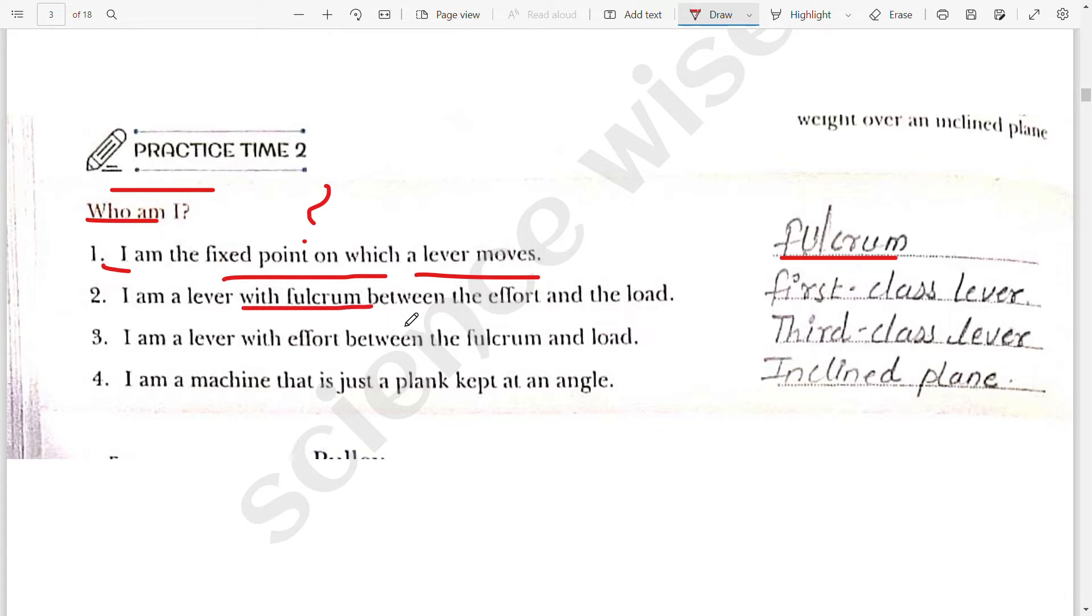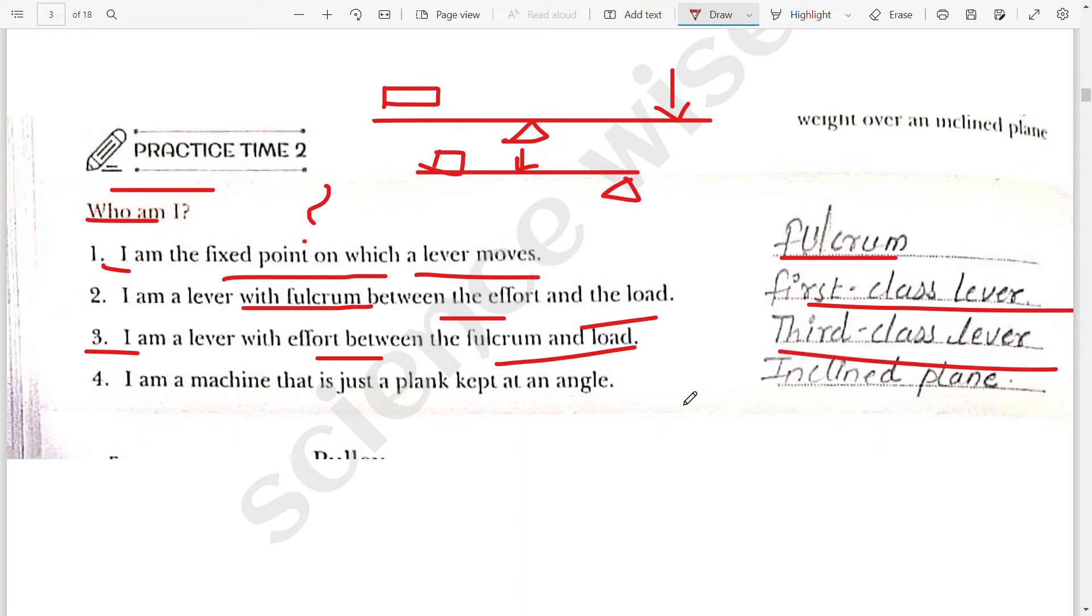I am a lever with fulcrum between the effort and the load. Third, I am a lever with effort between the load and the fulcrum. Fourth, I am a machine that is just a plank kept at an angle. So it is inclined plane.